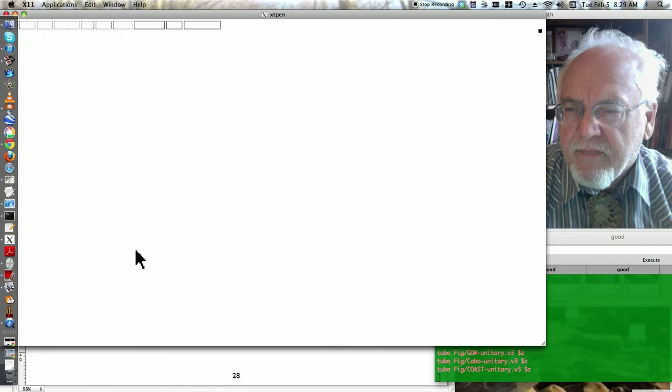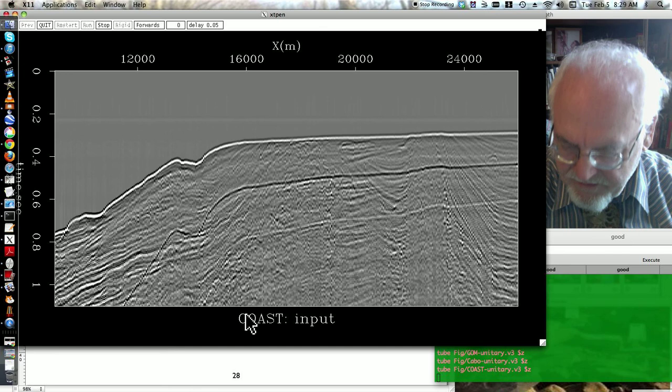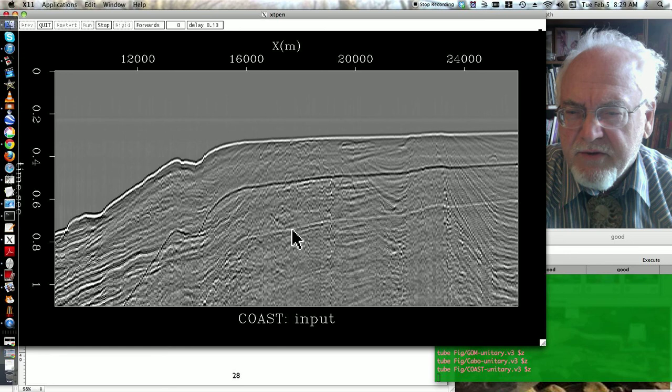This one is COAST, stands for Cascadia Open Access Seismic Transects. We can see they have their share of bubbles too, but they don't have as many.